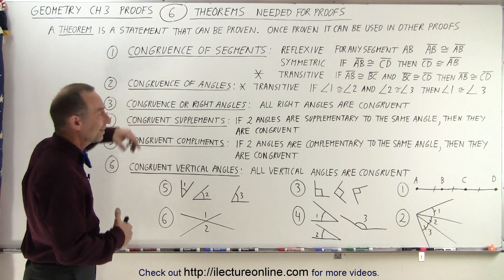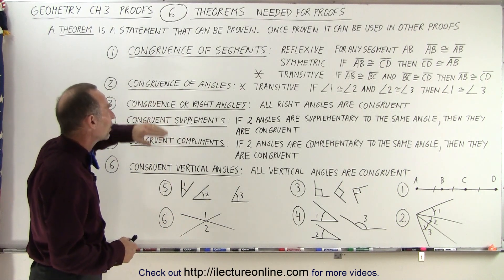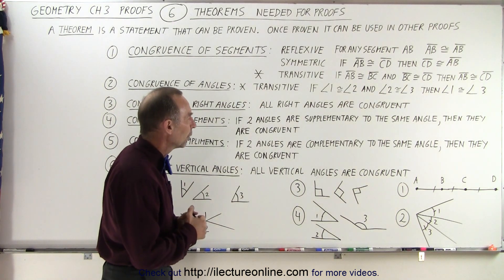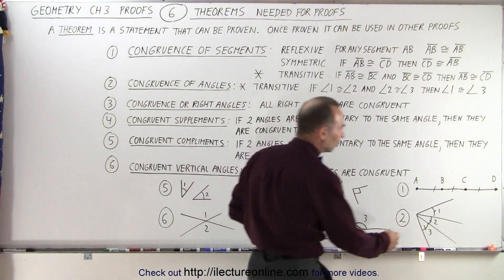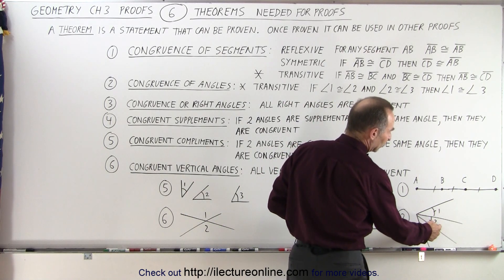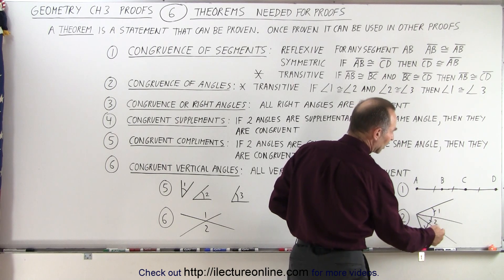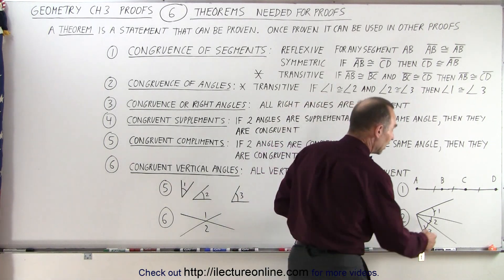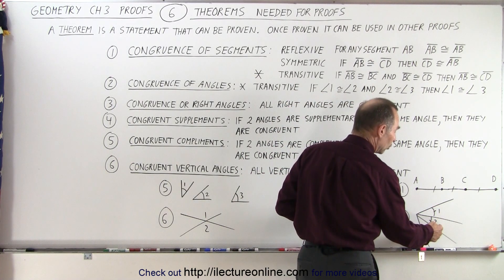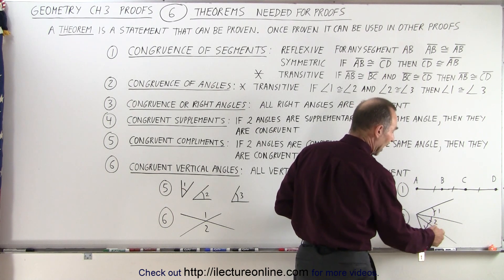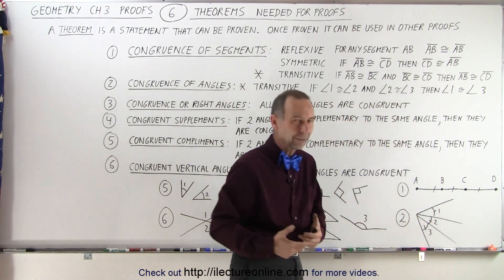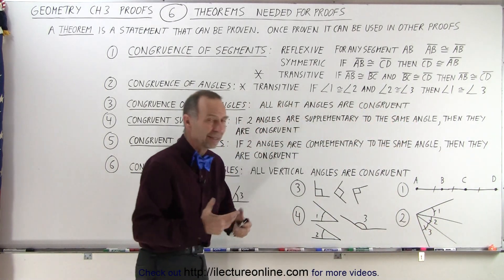The second theorem is the same thing, but now with angles — congruence of angles. We're going to use the transitive theorem, which says that if the measure of angle 1 equals the measure of angle 2, and the measure of angle 2 equals the measure of angle 3, then the measure of angle 1 must equal the measure of angle 3. In congruence terms: if angle 1 is congruent to angle 2, and angle 2 is congruent to angle 3, then angle 1 must be congruent to angle 3. If they're congruent, their angle measures are the same, and that's how we can use it.